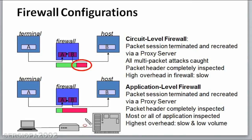As you can imagine, application level firewalls create the highest overhead and are therefore the slowest to run. They can only filter a low volume of data and take a significant amount of time to filter packages. But of course, they are the most secure. These are the four main types of firewalls, their configurations, and their different characteristics.